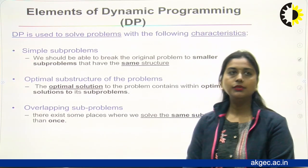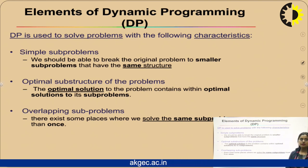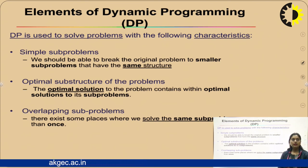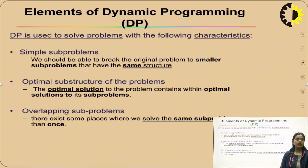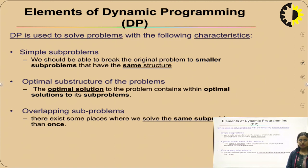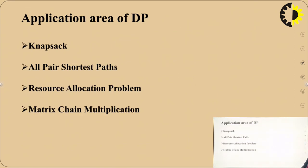What are the different elements used in Dynamic Programming? There are several characteristics. Number one: Simple sub-problems — we should be able to break the original problem into smaller sub-problems that have the same structure. Number two: Optimal sub-structure — the optimal solution of the problem contains the optimal solution of its sub-problems. Number three: Overlapping sub-problems — there exist places where we solve the same sub-problem more than once.